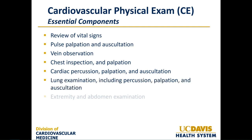It's also important to remember that a patient with cardiac disease will have findings outside of the cardiovascular physical exam. Lung examination including percussion, palpation, and auscultation are a critical component — in fact, the lung examination is a part of the cardiovascular physical exam. Extremity and abdomen examination is also important; if one has an abdominal aortic aneurysm or a bruit in the abdomen that might suggest renal artery stenosis, it's important to recognize this as it is associated with cardiovascular disease.